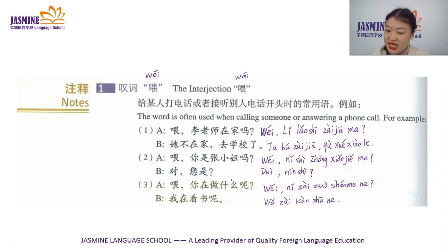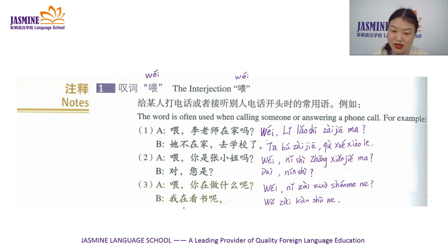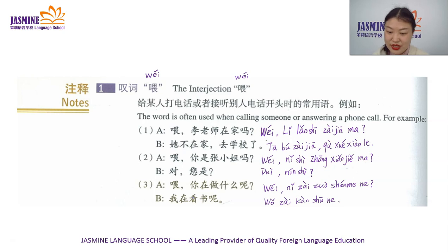Example 3: 喂, 你在做什么呢? Hello, what are you doing? 我在看书呢。 I'm reading a book.